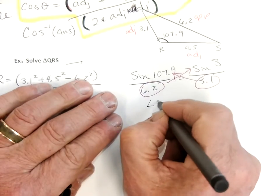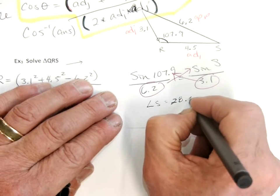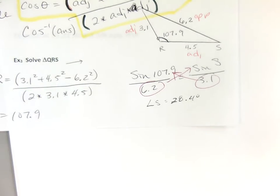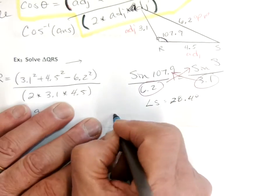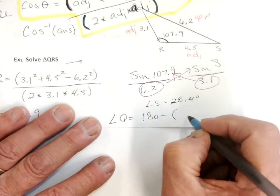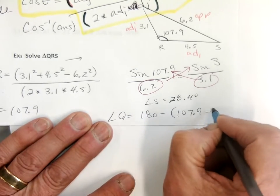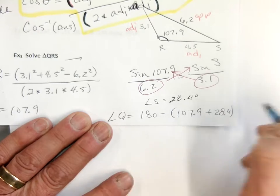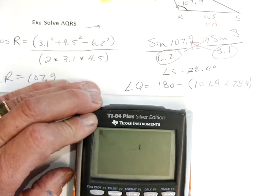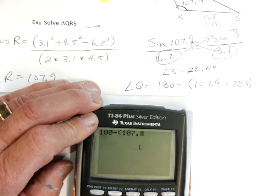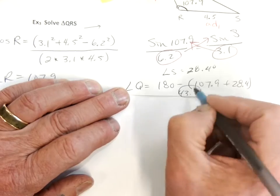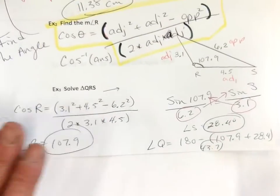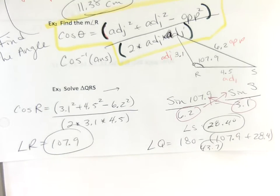I can even explain why that decimal is positive. I get 28.4, so angle S is 28.4 degrees. And of course the last angle should be easy — 180 minus the sum of 107.9 plus 28.4. So angle Q equals 180 minus the sum of 107.9 plus 28.4, and I get an answer of about 43.7 degrees.